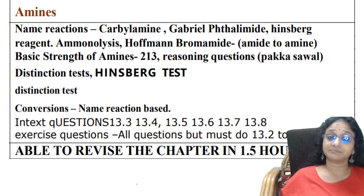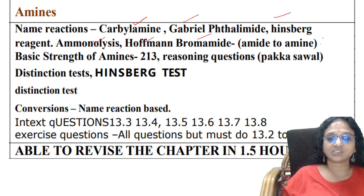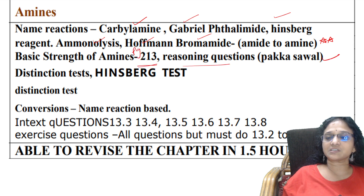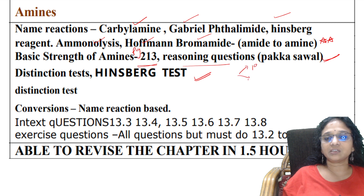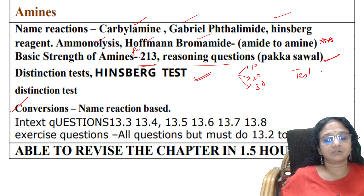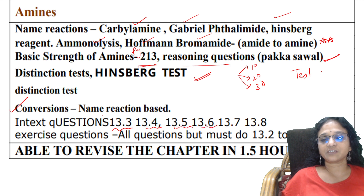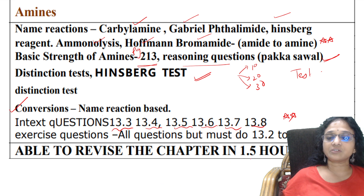Then comes amines. Remember preparation methods: carbylamine reaction, Gabriel phthalimide, Hinsberg test, ammonolysis, and Hofmann bromamide - amide to amine reaction is very important. Basic strength of amines at page 13 is very very important - reasoning questions are pakka sawal. Hinsberg test is used to differentiate primary, secondary, and tertiary amines - learn that test. Name reaction-based conversions are important. I'll be uploading a video on important conversions tomorrow. In-text questions 13.5, 6, 7, 8 and exercise questions are very very important. Revise the chapter in 1.5 hours.